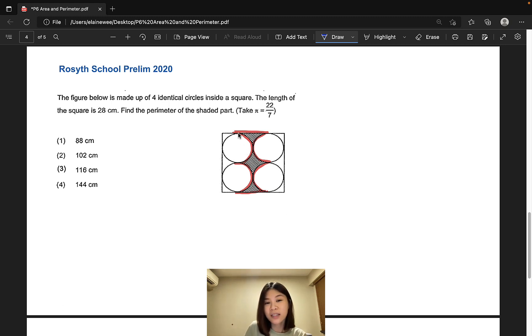Now, since we know that two semicircles make up one circle, four semicircles would make up two circles. So we should work out the circumference of two full circles right away. So four semicircles equals to two full circles.